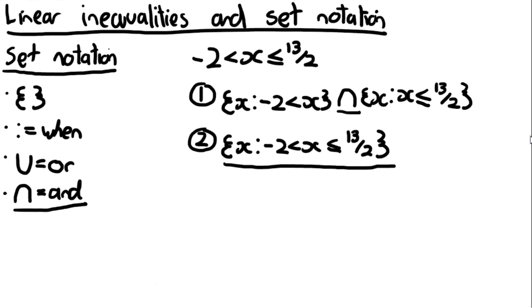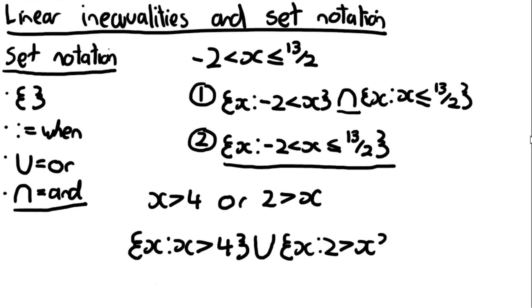Let's do one more example. Let's do the or example from before. X is bigger than 4 or 2 is bigger than X. So the way we do this is we're going to open a bracket and say X is a solution when X is bigger than 4 or we write this U looking sign. X is a solution when 2 is bigger than X and then we close the bracket.